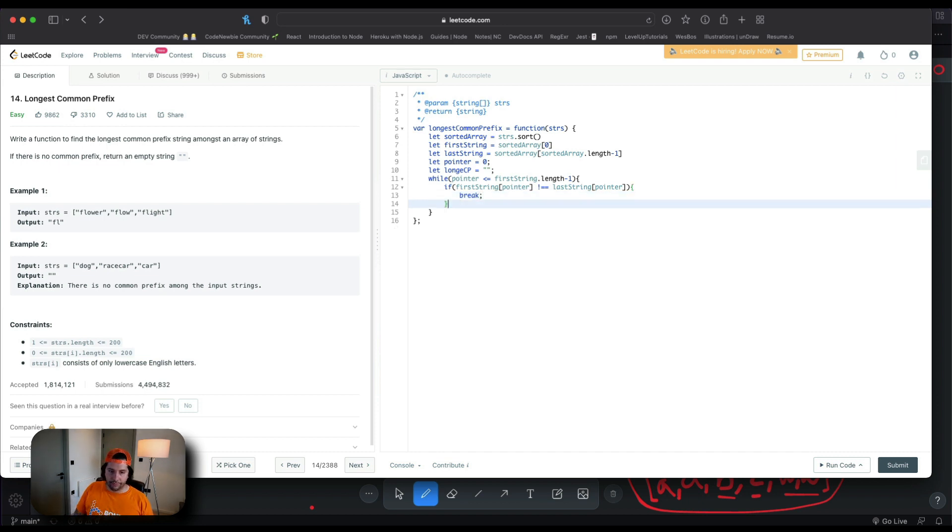All right. Finally, in the longest common prefix we are going to store the first string of the pointer and increase the position of the pointer. Sweet! And outside of the while loop what we need to do is to return the longest common prefix.